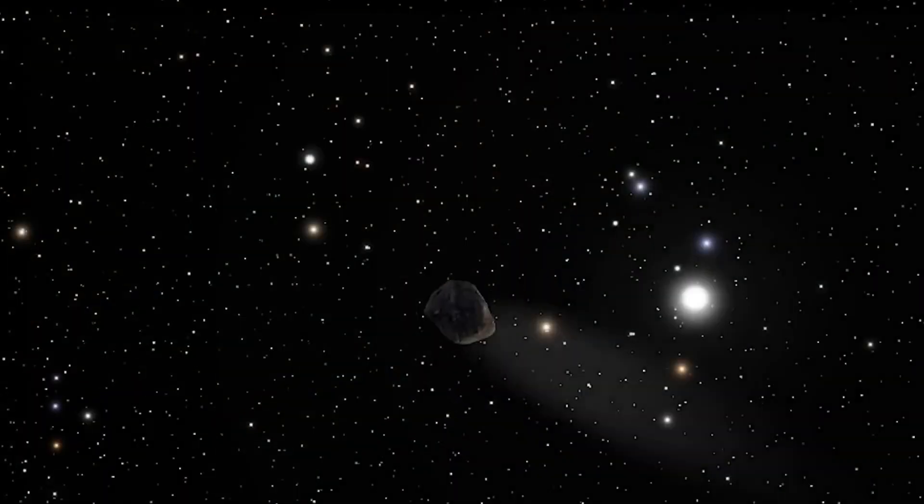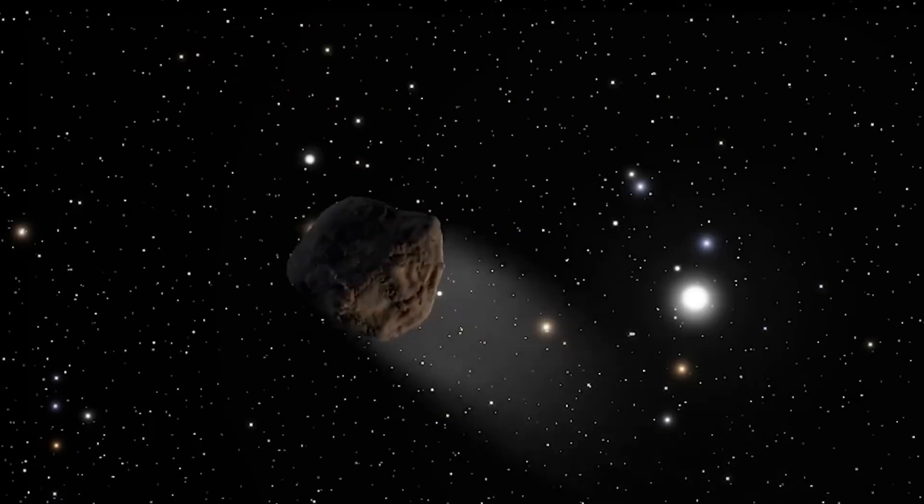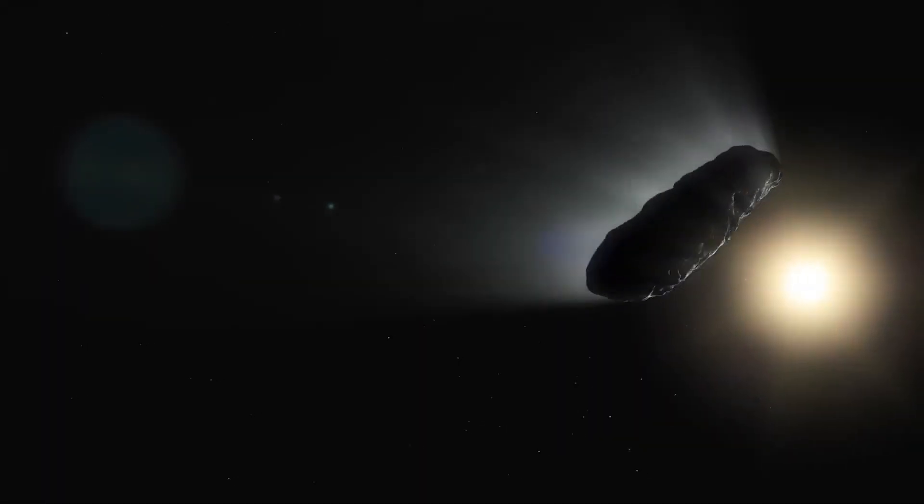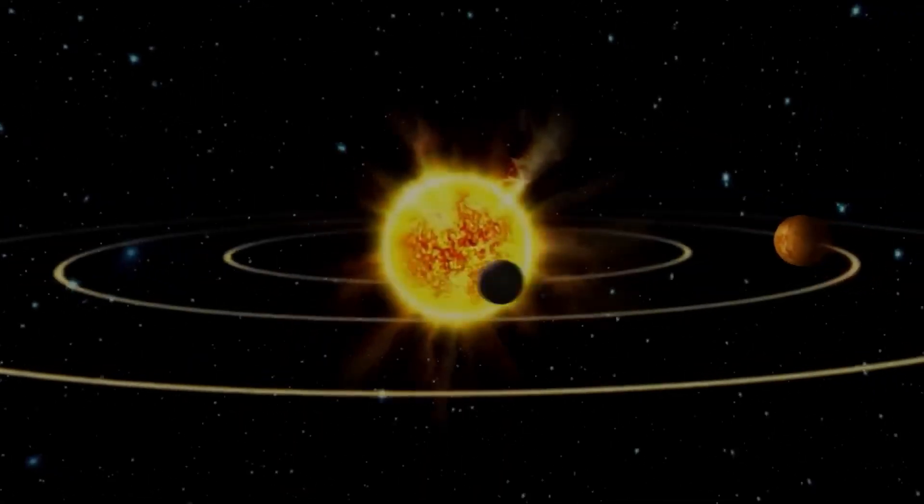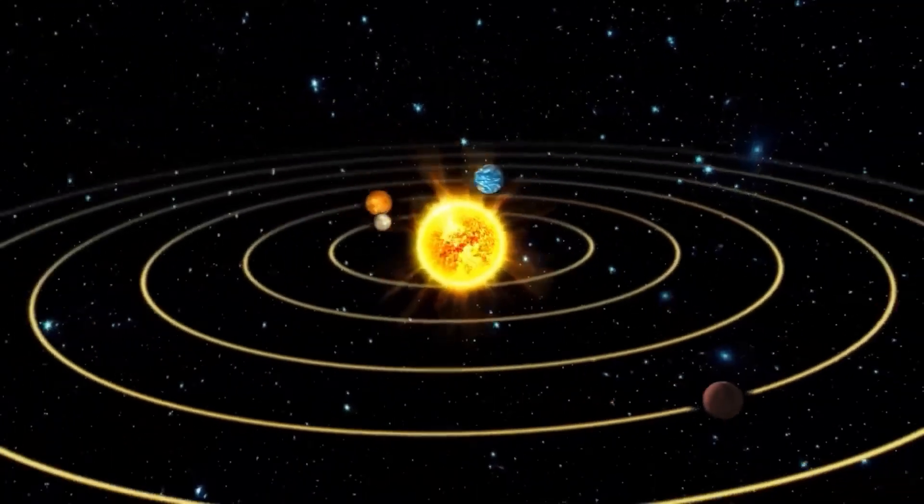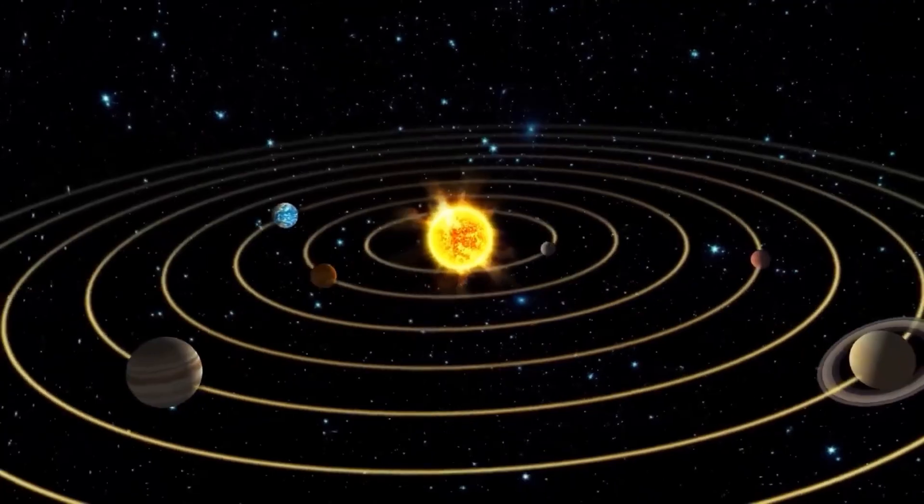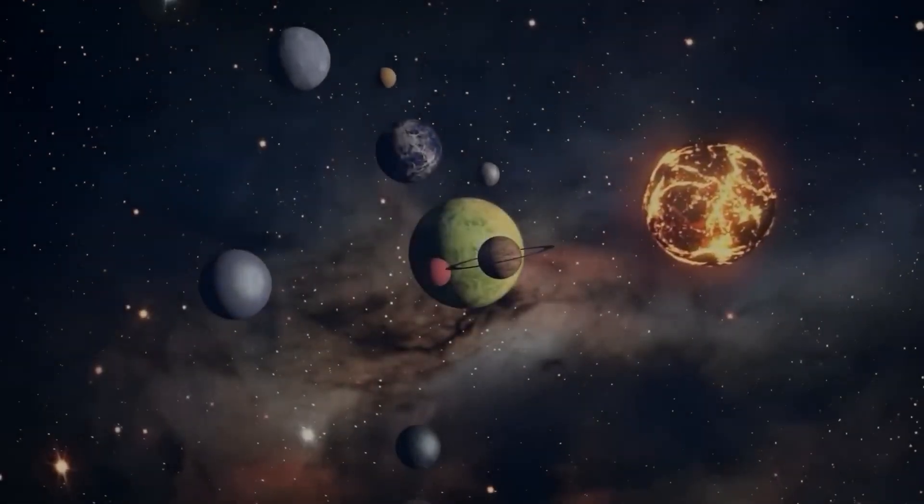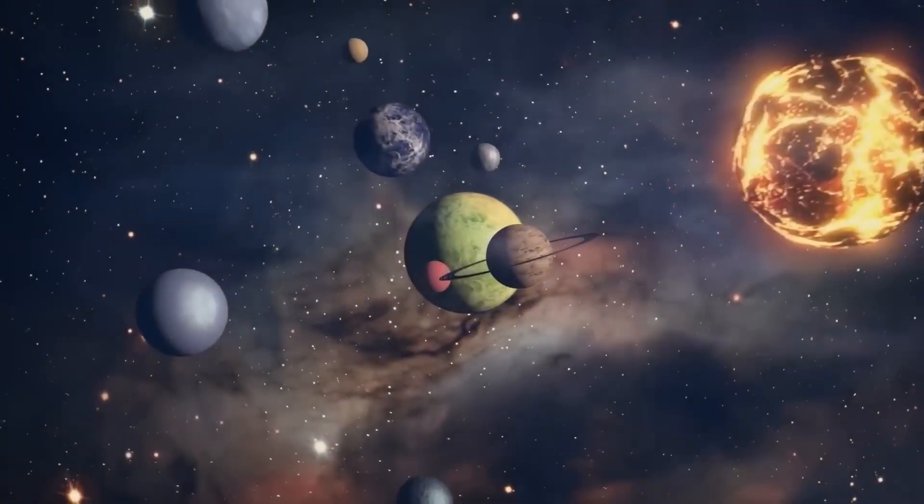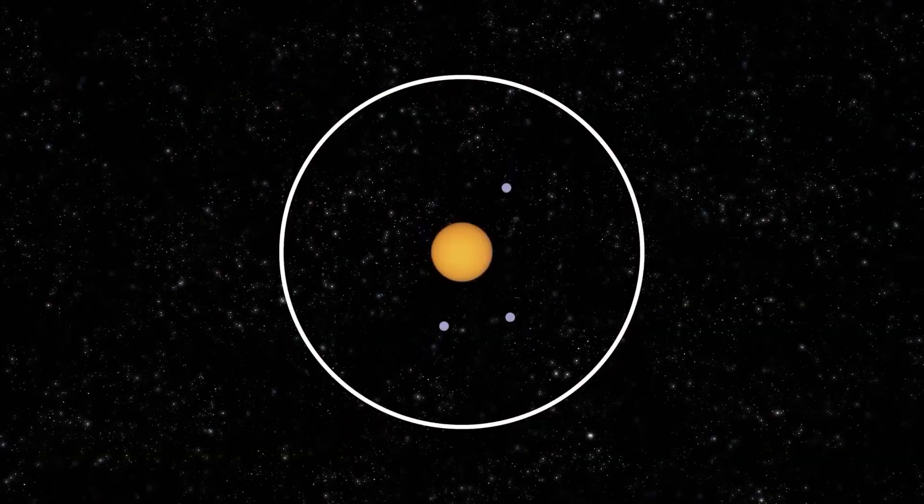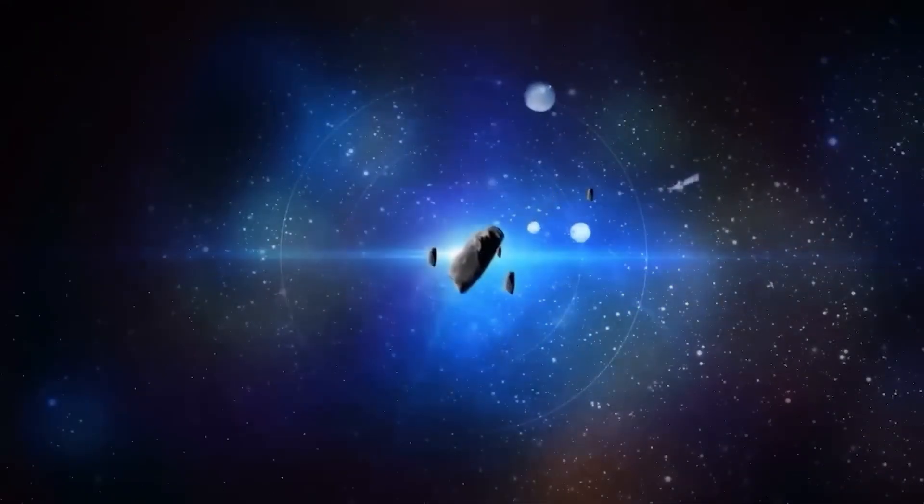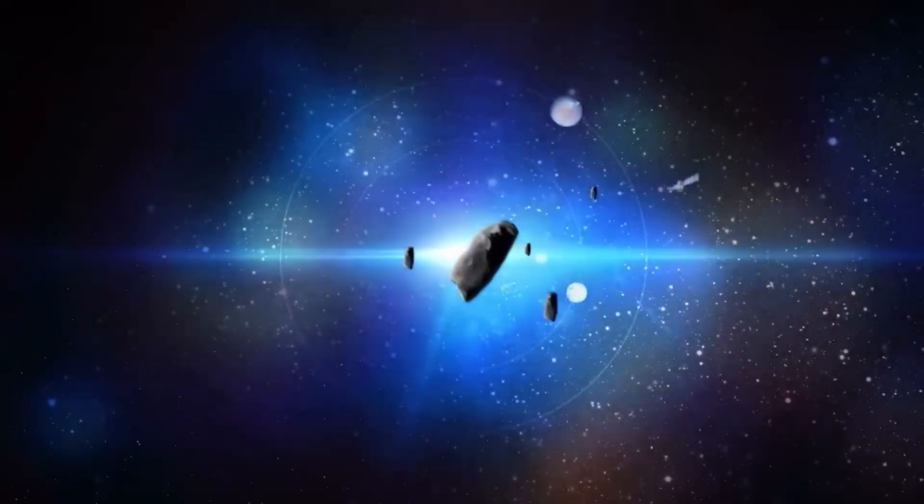This alignment has led some to wonder whether its path could have been planned. During its journey, 3I Atlas will pass close to several planets of interest: Mars, Venus, and Jupiter. The fact that it approaches multiple planets along its path has fueled speculation about whether it could be surveying them. While some astronomers believe it's simply an unusual comet, the combination of its speed, direction, alignment, and lack of a typical coma or tail makes it stand out.